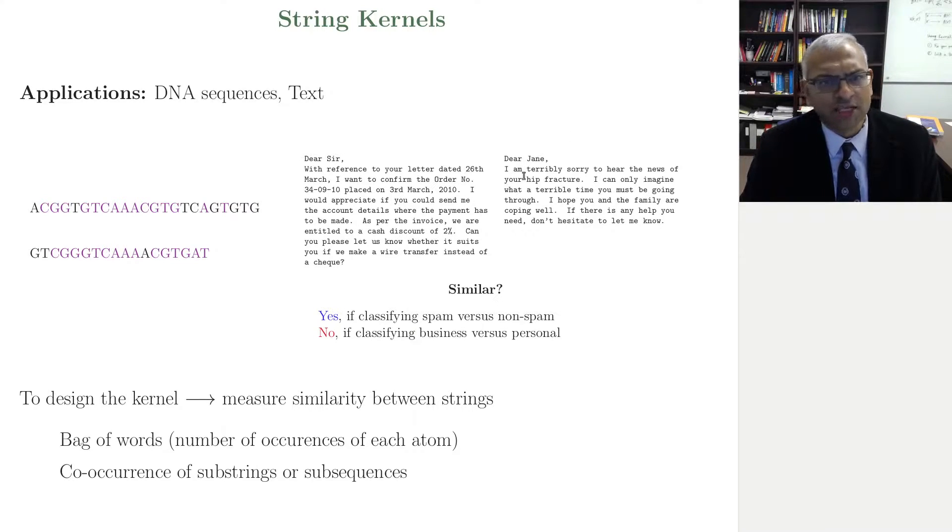And then, Dear Jane, I'm terribly sorry to hear the news of your hip fracture. I can only imagine what a terrible time you must be going through. Well, this is an example of an email that is clearly a personal email of Jane's, and some friend is consoling her on some hip fracture. So now, are these texts similar or not? Because this is the question you need to answer in order to derive a kernel, in order to define a measure of similarity, in order to define your kernel.